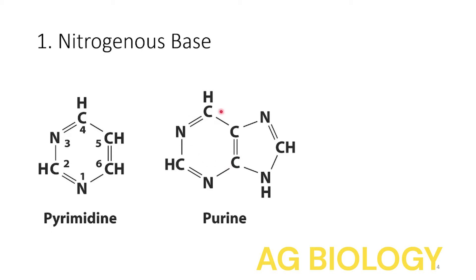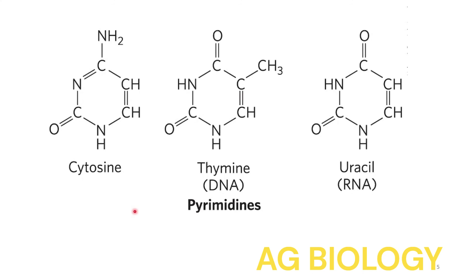The pyrimidine ring should therefore get the lowest possible number. Numbering should also be preferred so that the ring junctions get the highest possible number. Starting with N1, numbering goes in the anticlockwise direction so that the ring junction gets numbers 4 and 5. For the imidazole ring, numbering continues in the clockwise direction from 7 to 9. So we have nitrogens at positions 1, 3, 7, and 9.